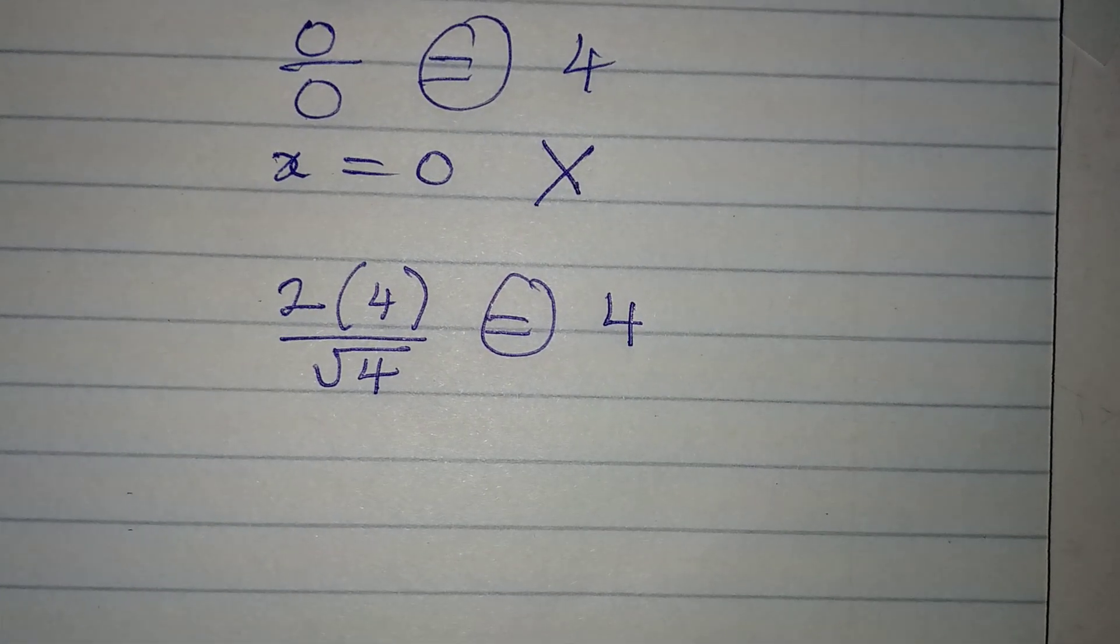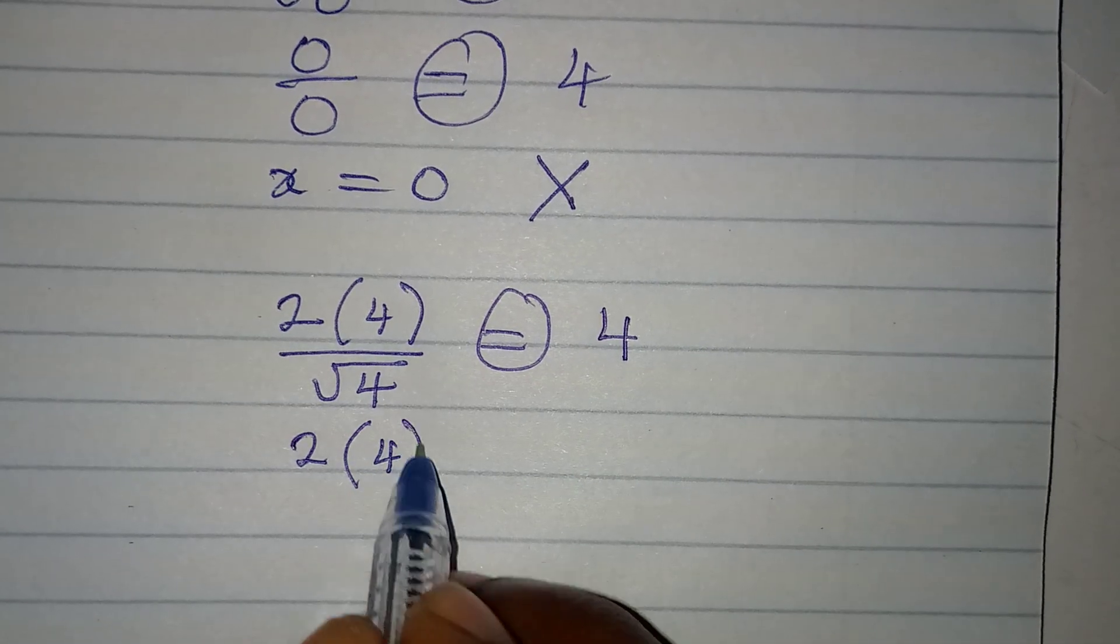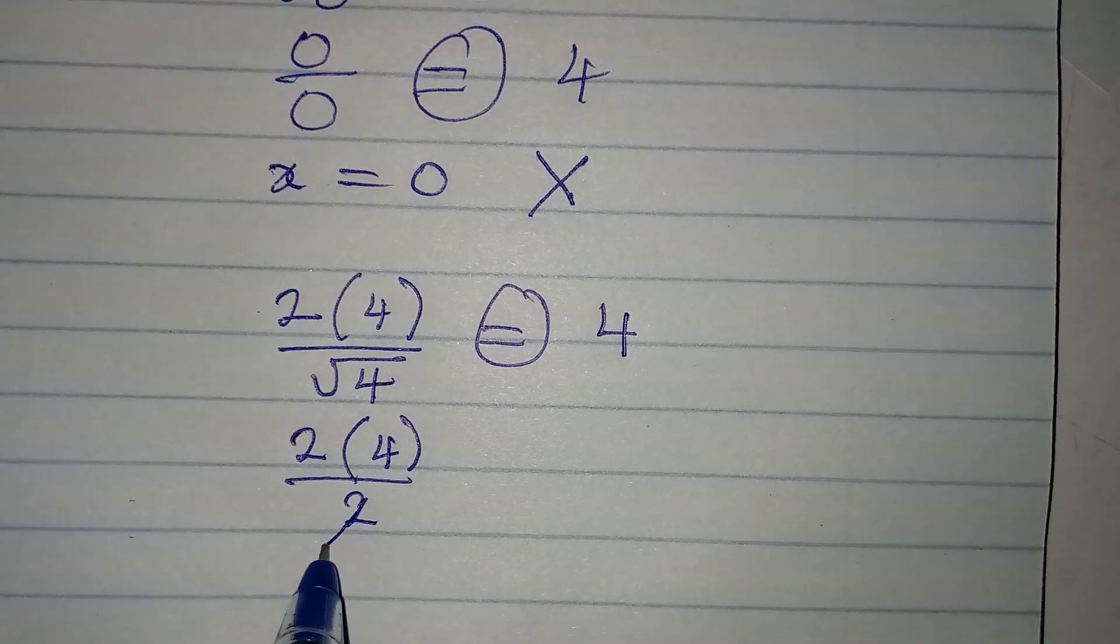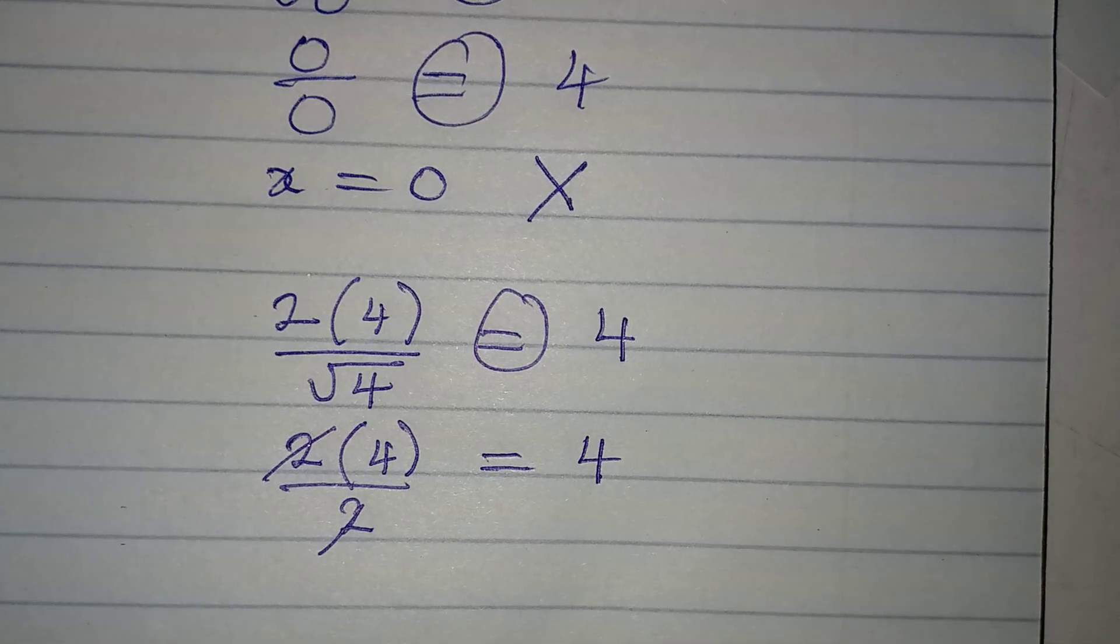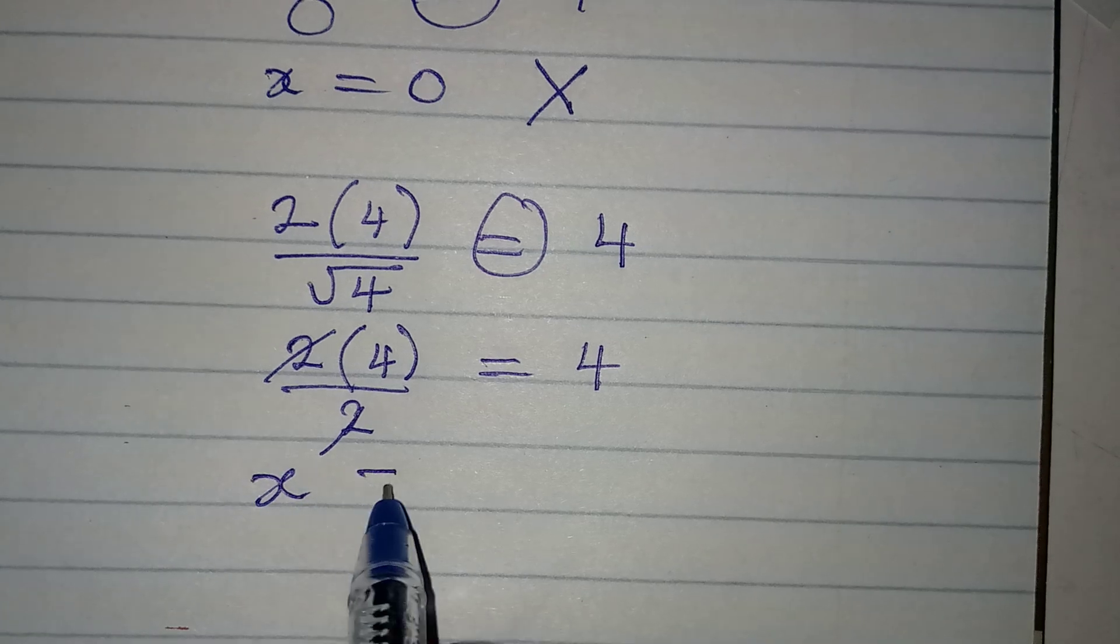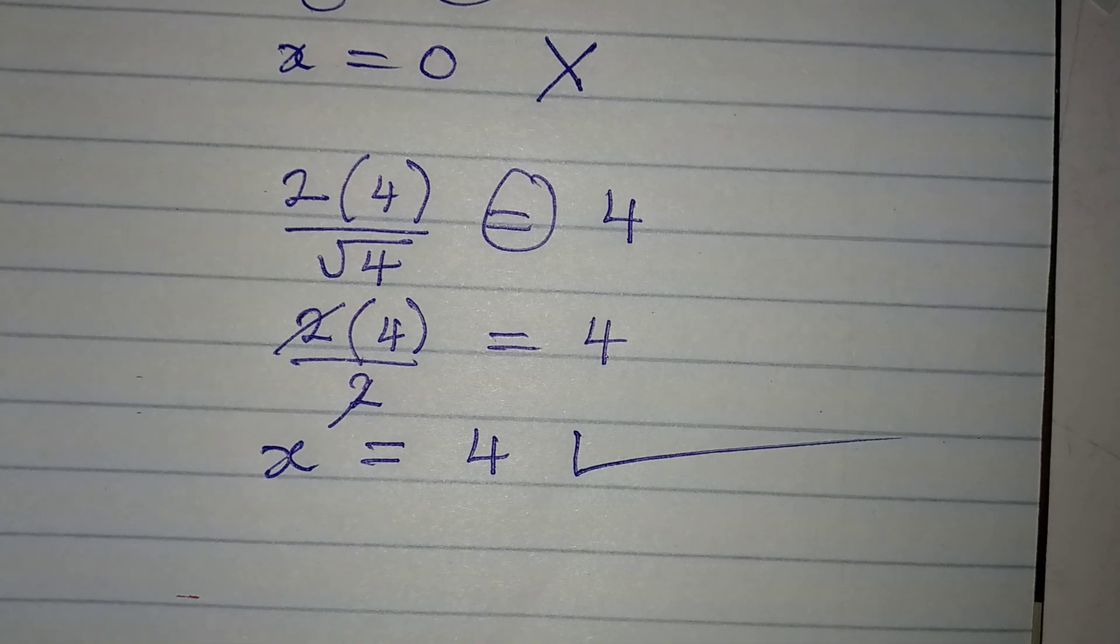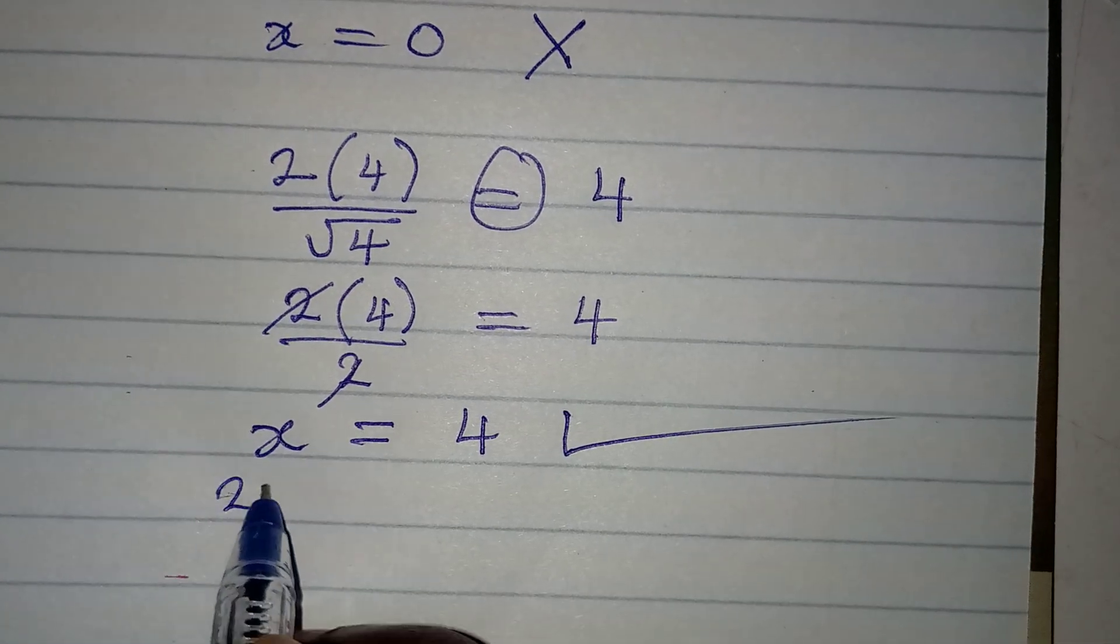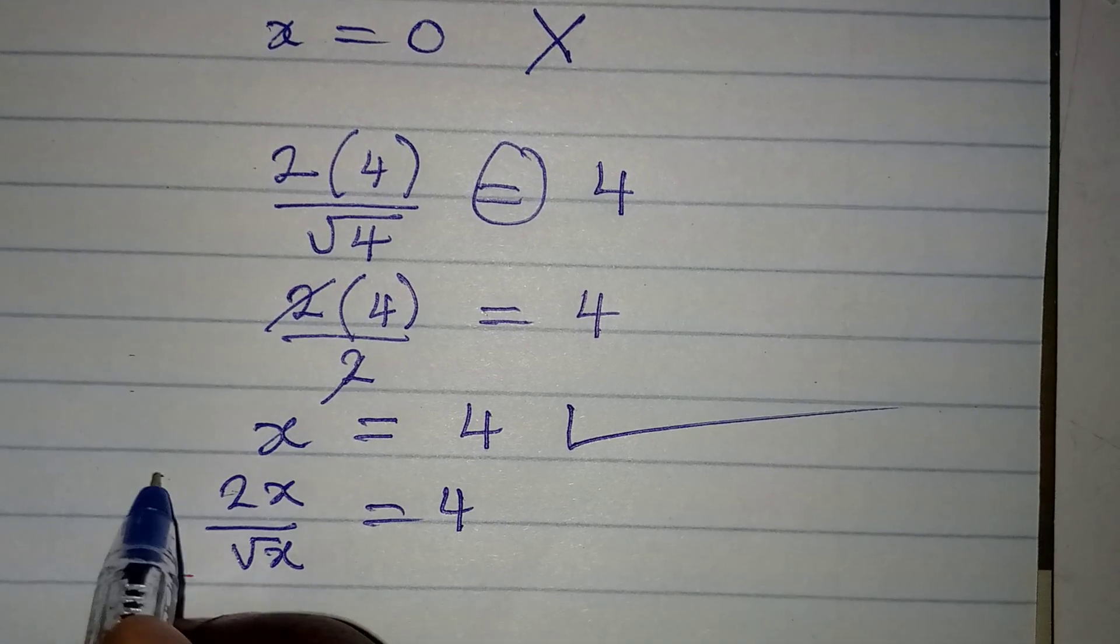Because, this is the same thing as 2 multiplied by 4 over the square root of 4, which is 2. And then, 2 can cancel this. And, at the end, we have 4 as our answer. So, this is the confirmation that x is equal to 4 satisfies the equation. And, it is the only solution that satisfies the equation 2x over square root of x equal to 4.